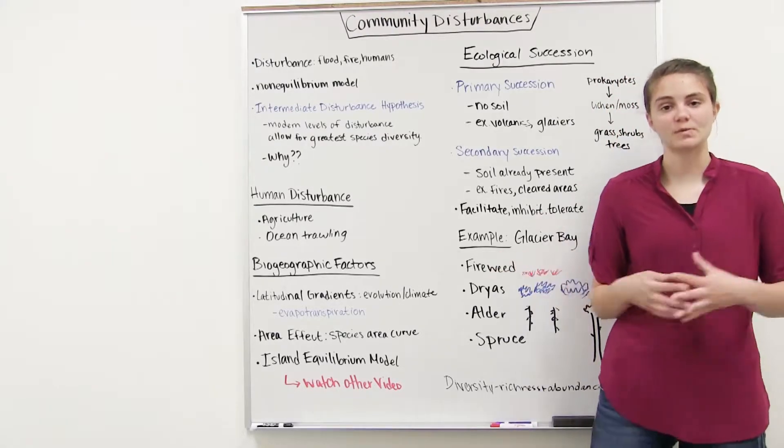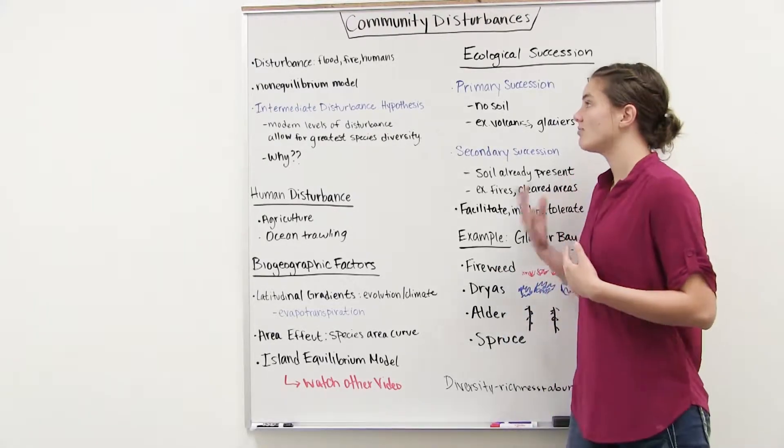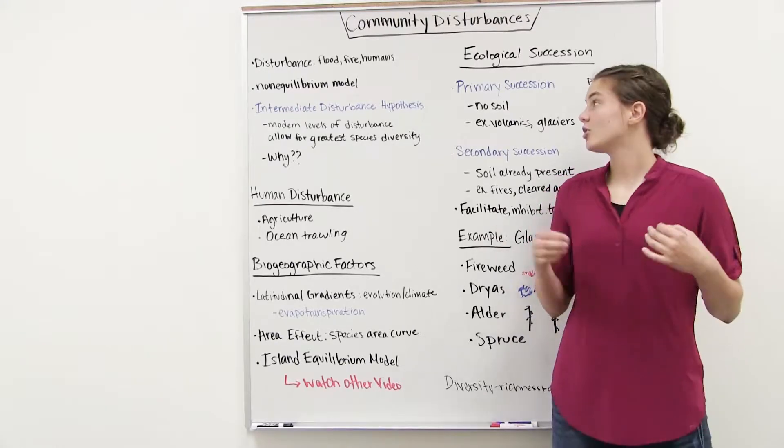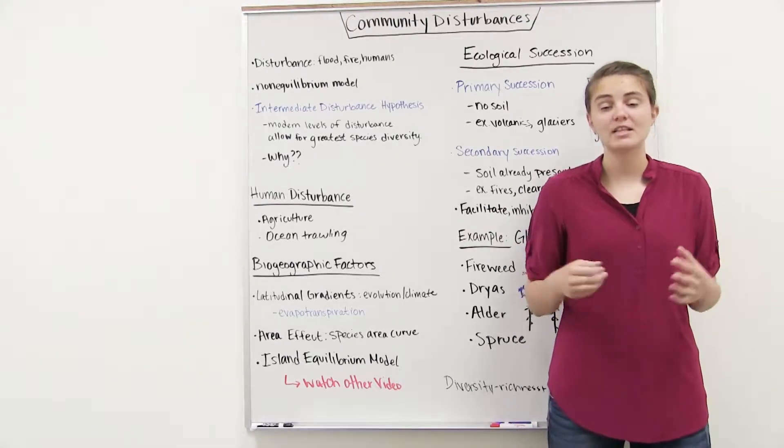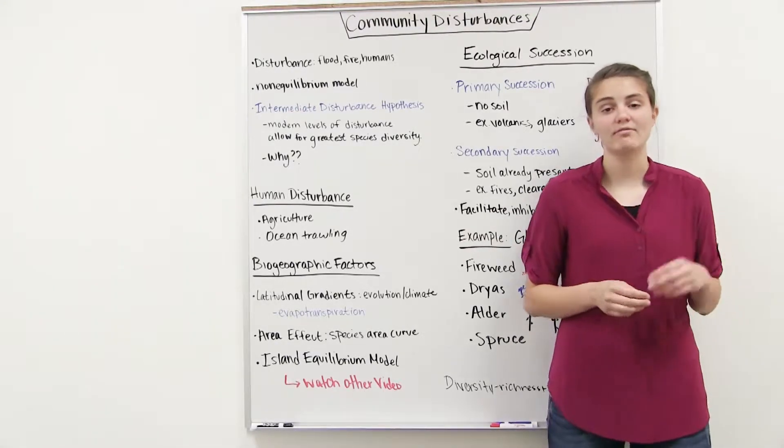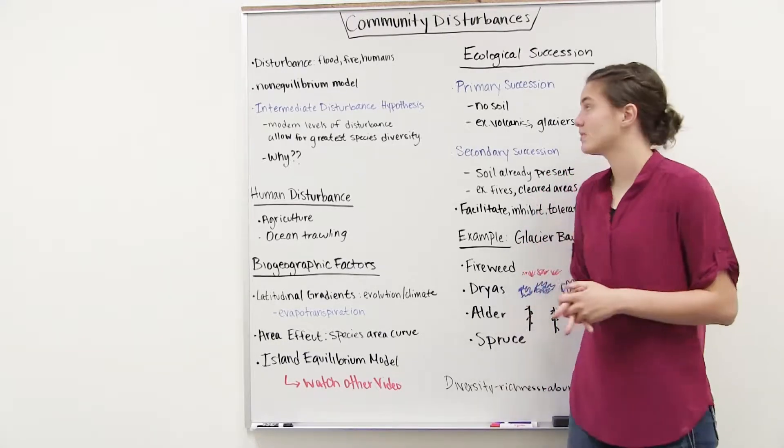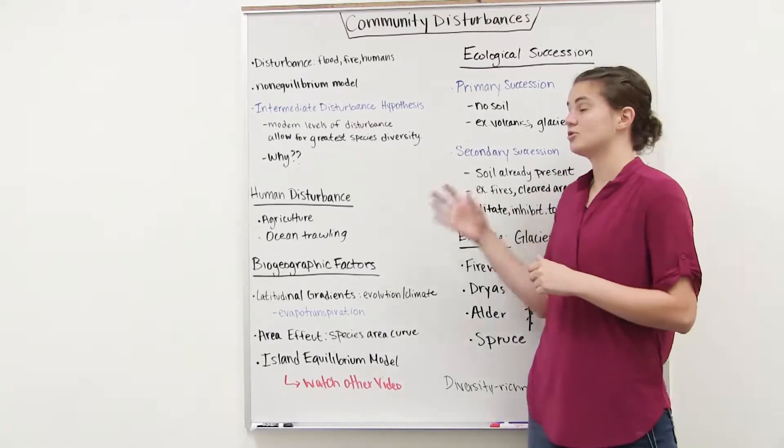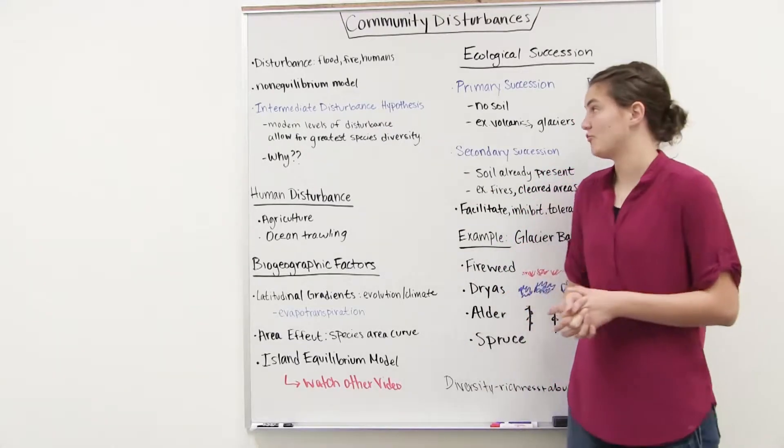So to start off, what's a disturbance? Well, disturbances can be things such as fire, flood, drought, human activity, and basically what it's doing is it's going to affect the number of organisms that live in the community by potentially reducing them and reducing the resources that are available.